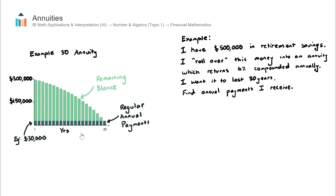Maybe it was compulsory through, say, a 401k, or a pension plan, or a superannuation fund — there are different words for it around the world. Maybe it was compulsory, but maybe they also did it voluntarily as well. They had the discipline to put some money away during their working years to fund their retirement.